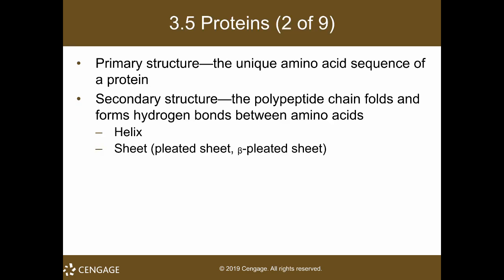Proteins have very complicated, diverse structures. We classify their structure into four levels. The first level is the primary structure, which consists of the unique amino acid sequence of the protein. The protein is only a single chain — there are no branches in the polypeptide chain; it's unbranched. So, you have a sequence of the 20 amino acids, and that's the primary structure.